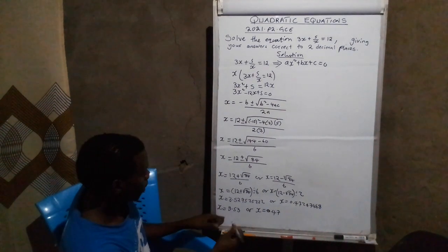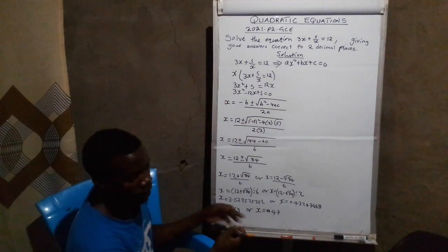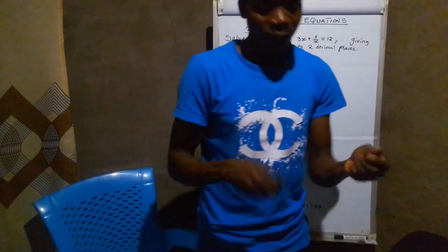Therefore, these are the answers: x equals 3.53 or x equals 0.47. That's it. Thank you for watching.